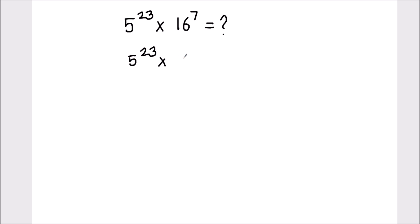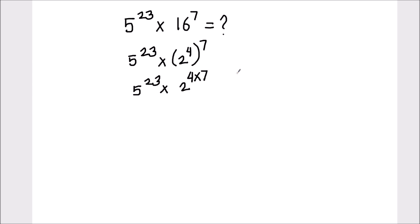We can write 16 as 2 raised to power 4 in exponent form, so that's going to be 2 raised to power 4, whole raised to power 7. Now again this is 5 raised to power 23 times 2 raised to power 4, whole raised to power 7.